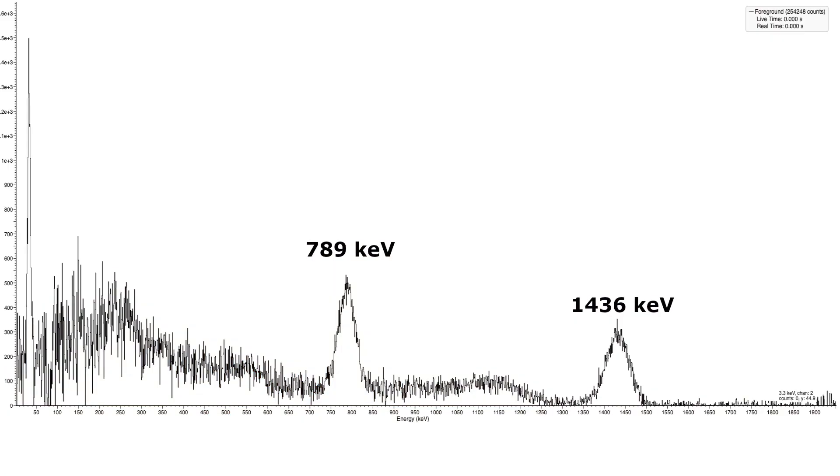Gamma spectroscopy reveals two peaks at 789 keV and 1436 keV, which are both caused by the decay of lanthanum-138 through electron capture or by beta emission. And in both cases, a gamma ray is also released.